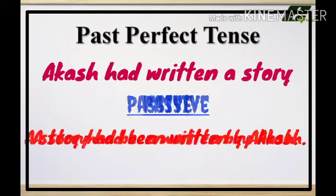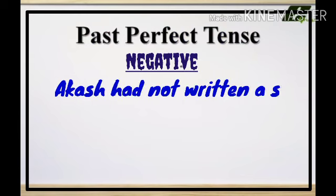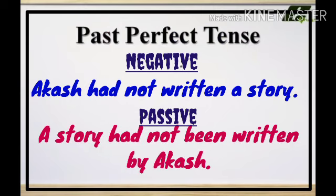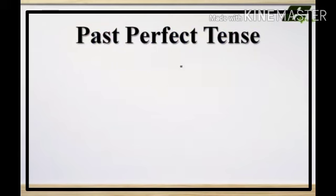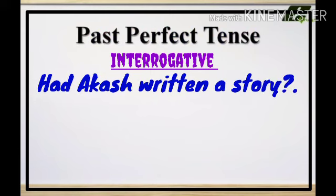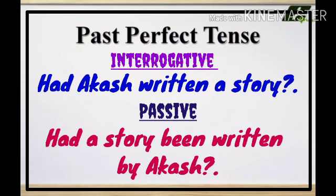For the negative: 'Akash had not written a story.' In passive: 'A story had not been written by Akash.' For the interrogative, bring the helping verb first: 'Had Akash written a story?' When we change to passive voice, use the same helping verb 'had': 'Had a story been written by Akash?'